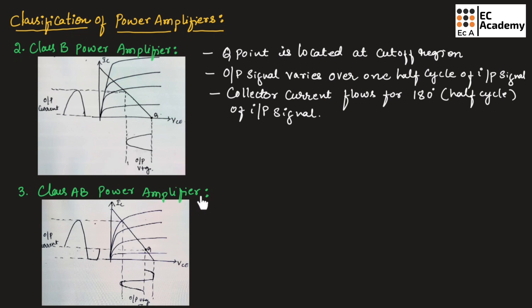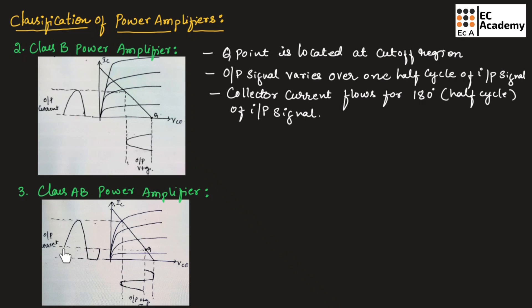Let us understand class AB power amplifier. In class AB power amplifier, the Q point is located below the center of the DC load line and above the cutoff region. Hence, the output is more than 180 degrees and less than 360 degrees of the input signal. This is the output voltage and this is the output current of the class AB power amplifier.